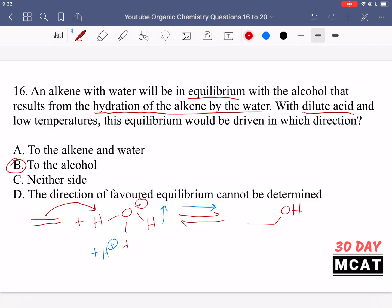So B is correct. We're going to go towards the side with the alcohol. We're not going to go to the left, to the reactant side. And C is incorrect, saying that the reaction isn't going to change either way, because adding acid did change the concentration of one of the species. So it did shift the equilibrium. And then D is incorrect, saying the favored equilibrium direction cannot be determined. That's incorrect.